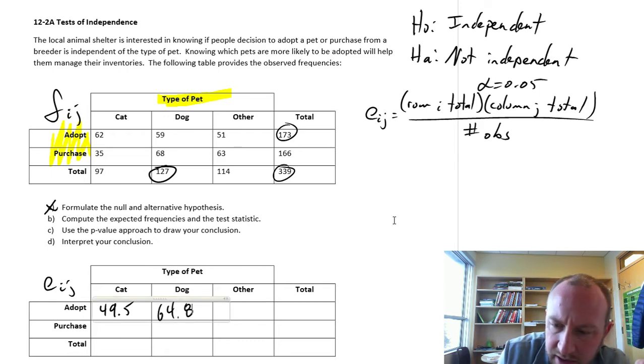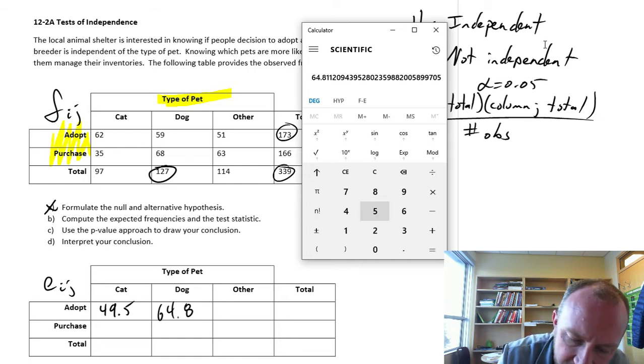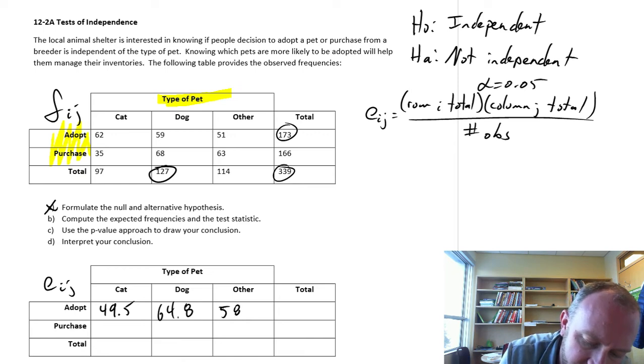And the next one, so this is other, this is now going to be 114 times 173 divided by 339. So 58.